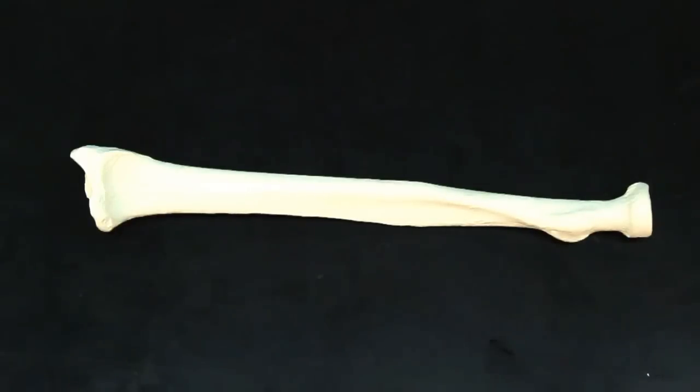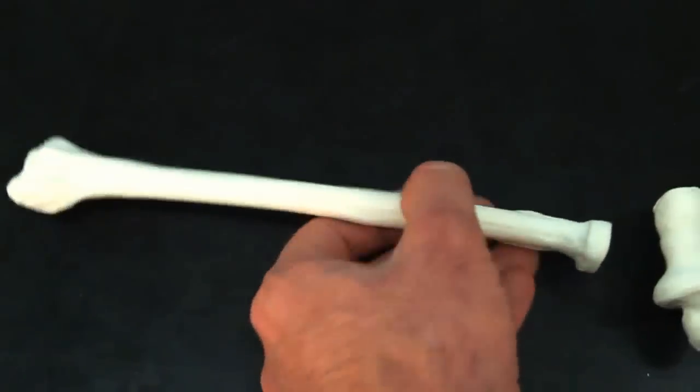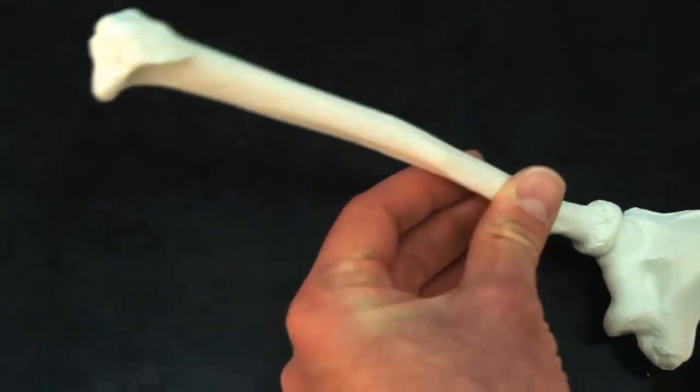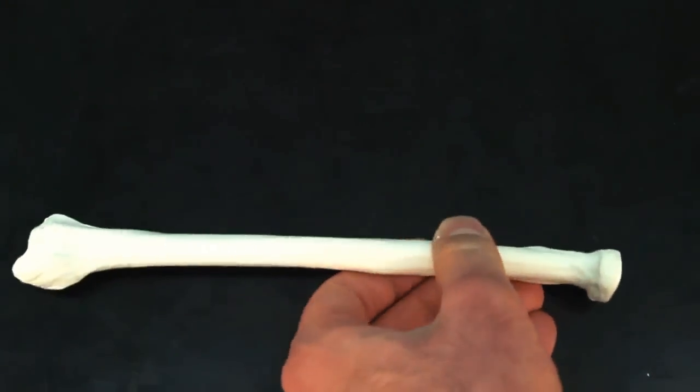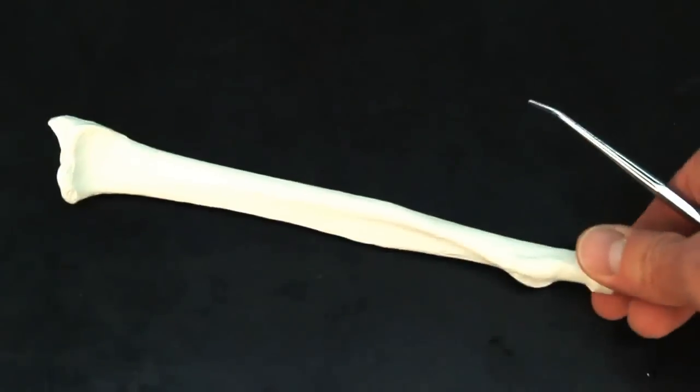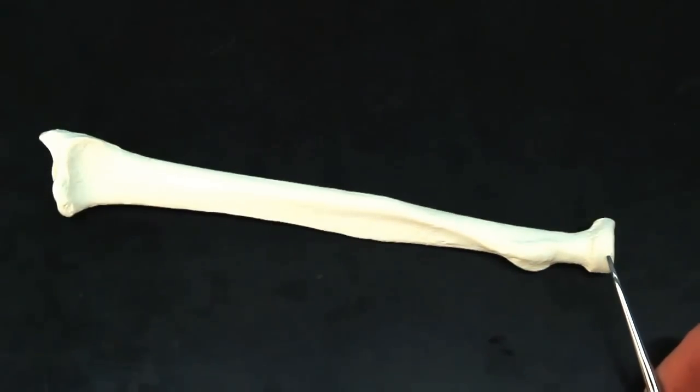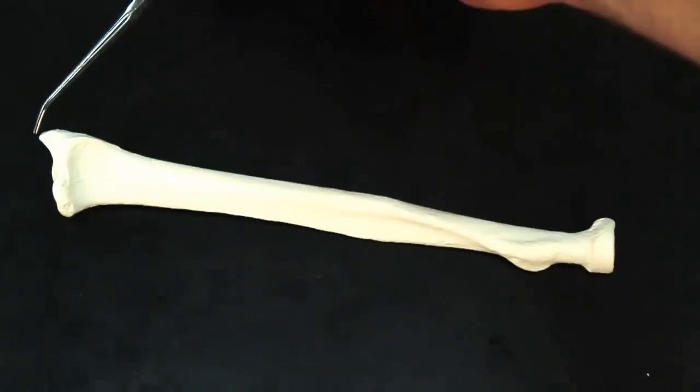It articulates with the ulna at the radial notch, but it can also be right at the capitulum, right at the capitulum of the humerus. So we have the head proximal. We need to have the styloid process distal, but also lateral.